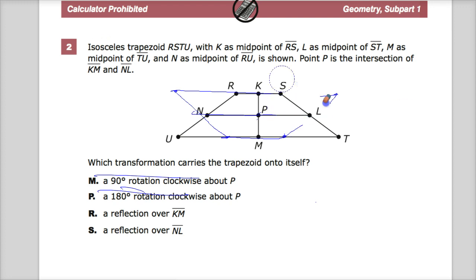Our last choice, of course, is what happens if we reflected it over KM. This one right here. That's likely our answer.